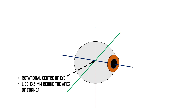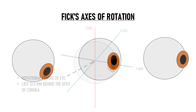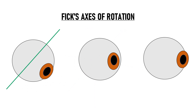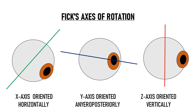The center of rotation of the eye lies 13.5 mm behind the apex of the cornea. These axes — the X-axis, Y-axis, and Z-axis — are known as Fixed Axes of Rotation. The X-axis is oriented horizontally, the Y-axis is oriented antero-posteriorly, and the Z-axis is oriented vertically.